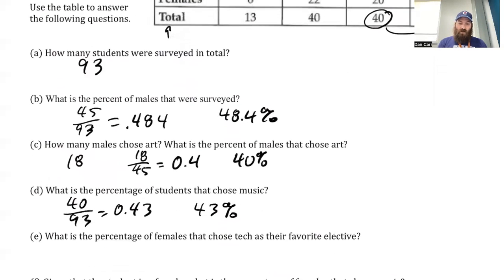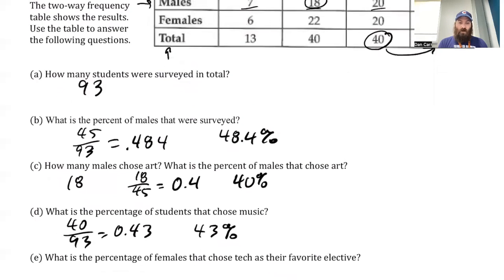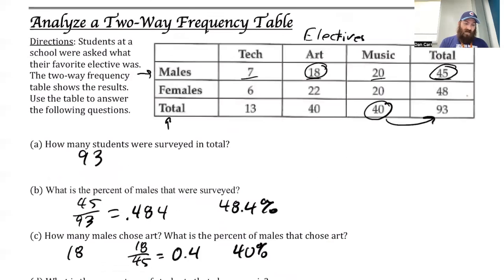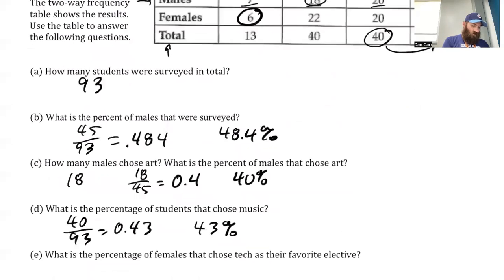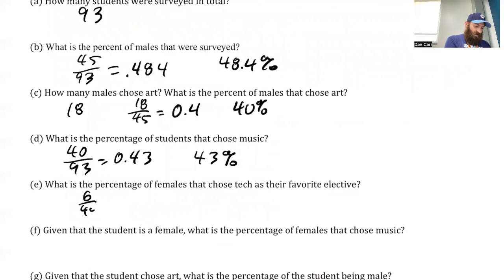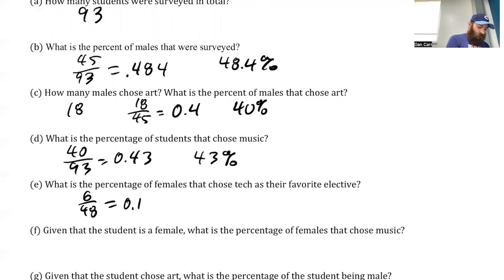What is the percentage of females that chose tech as their favorite elective? I'm going to assume the percentage of females that chose tech out of all the females. So there were six female students that chose tech out of 48. I'm going to do 6 out of 48, and that gives me a decimal of 0.125. So if I turn that into a percentage, I multiply by 100 — 12.5%.